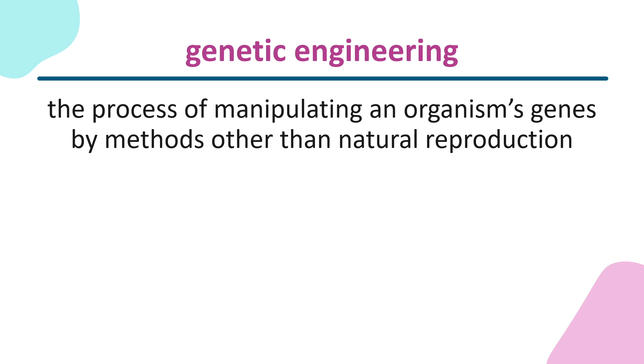Genetic engineering is the process of manipulating an organism's genes by methods other than natural reproduction. This means that GMOs do not include simply plants and animals that have been bred to produce more food faster. Rather, a GMO is an organism that has had alterations made intentionally to its genetic code to produce what is deemed by the genetic engineer as improvements. Some of these changes cause organisms to grow larger and produce more food, while others make them more resistant to things that might eat them or harm the organism being farmed.